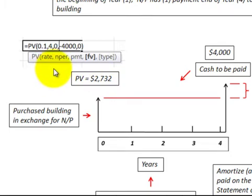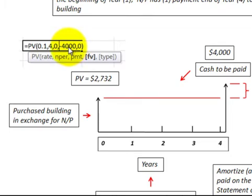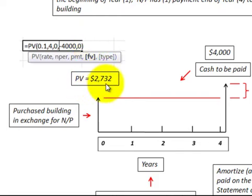I use an Excel function or formula here. We know our interest rate is 10%, and we have a four-year period. We paid $4,000 at the end of the fourth year, so that's a future value, paid at the end of the year — so we put in zero on this Excel function. We come up with our present value of $2,732. So the $4,000 payment at the end of the fourth year is worth $2,732 today.